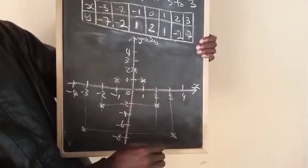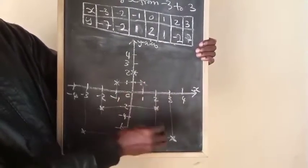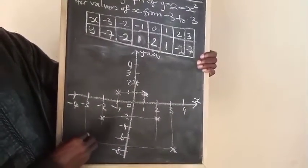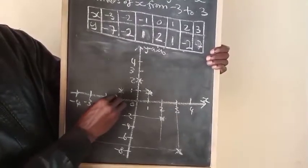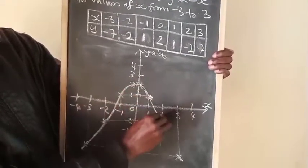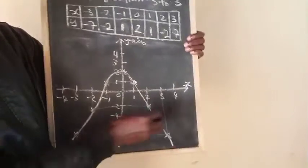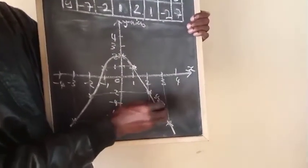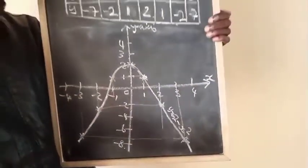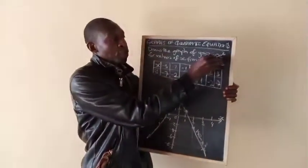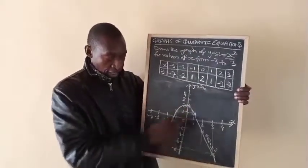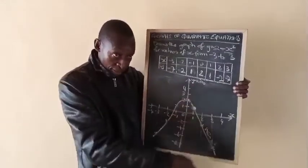Now we need to connect the curve. The line won't be straight, it will be curved. It comes from here at 2, goes down in a curve shape.